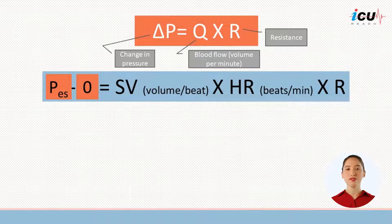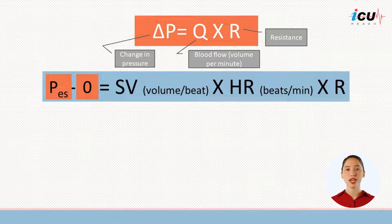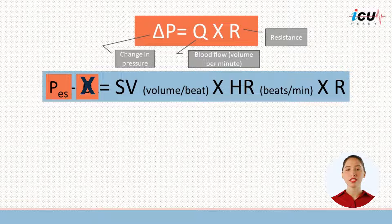Now assuming that venous pressure is very low, and arterial pressure is equal to end-systolic pressure, we can omit the venous pressure on the left side and simplify the equation into end-systolic pressure equals stroke volume multiplied by the heart rate and resistance.